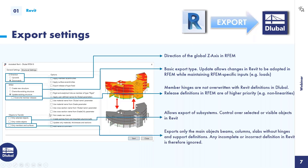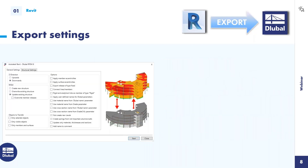There are additional functions related to the export of subsystems. You don't have to export the whole 3D model from Revit to RFM — you can export just partial structures, maybe just the steel construction or just the concrete part, and you can do it via selections or visibilities in Revit.